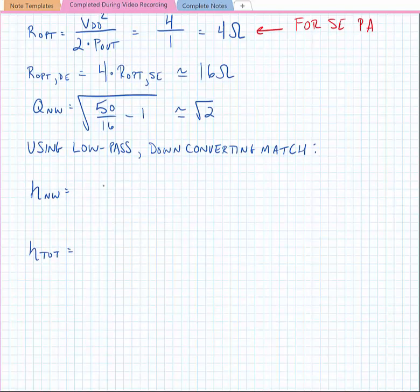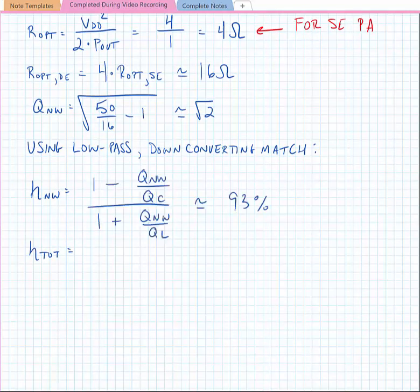And we know that we're probably going to want to use a low-pass down-converting impedance match. We know that our efficiency had a form that we learned earlier. The form for efficiency was 1 minus Q_network divided by Q_C, quantity divided by 1 plus Q_network divided by Q_L. And in this case, the efficiency is about 93%.